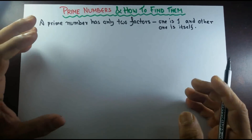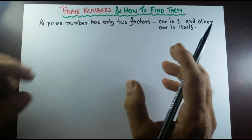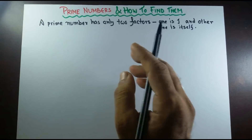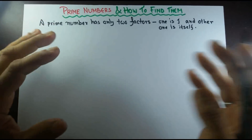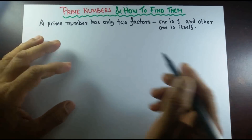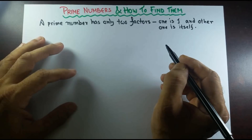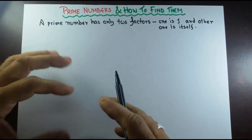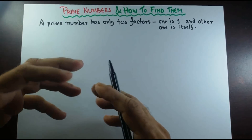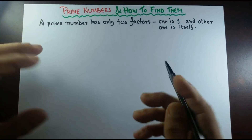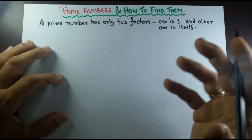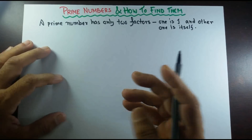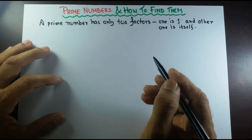If we have a bigger number, we all know a few prime numbers: 2, 3, 5, 7 — those are the prime numbers. But how do we find out if a number bigger than that is a prime number or not?